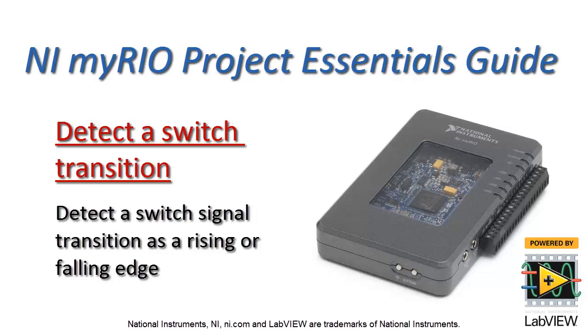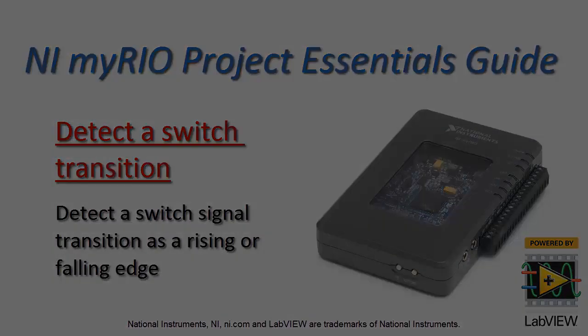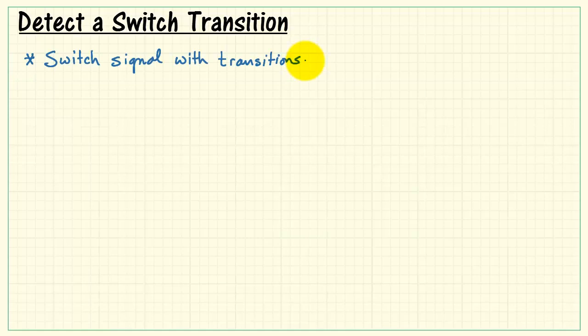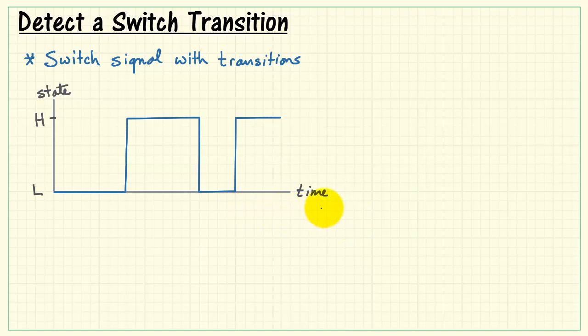Let's learn how to look at a switching signal and detect a transition, looking either for rising or falling edge. Switch signals are very common sorts of signals for digital systems, and in particular we are usually interested in knowing when the switch has changed states.